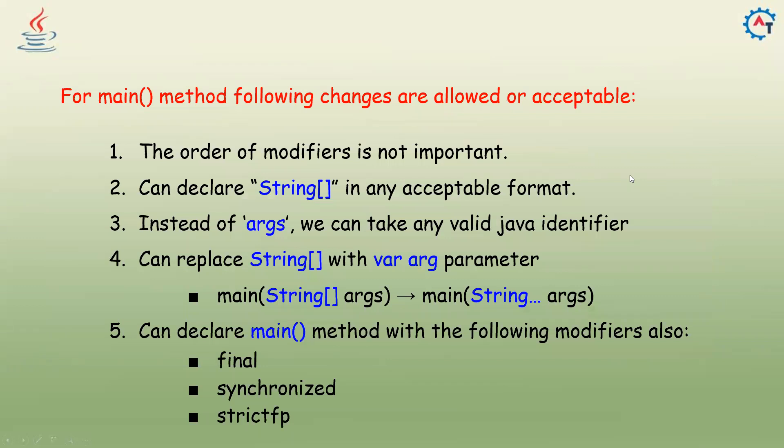For the main method, the following changes are allowed or acceptable. First, the order of modifiers is not important — 'public static void main' or 'static public void main' makes no difference, both are valid. Second, you can declare the String argument in any acceptable format. Third, instead of 'args' you can use any valid Java identifier — 'args' is conventional but not mandatory.